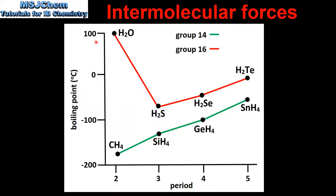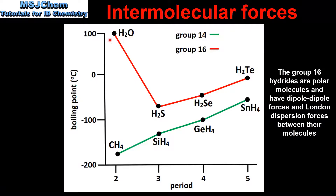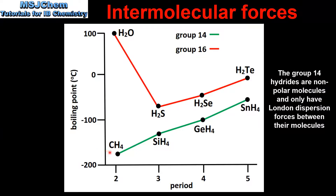In this graph we can compare the boiling points of the group 14 and the group 16 hydrides. Starting with group 16, we can see that H2O has a much higher boiling point compared to the other group 16 hydrides. This big difference in boiling point is due to the fact that H2O can form hydrogen bonds between its molecules. The increasing boiling point between H2S and H2Te is due to the increase in molar mass, resulting in stronger London dispersion forces. For the group 14 hydrides, starting with methane which is a non-polar molecule and only has weak London dispersion forces, as we go from CH4 to SnH4 the boiling point increases due to the increase in molar mass and stronger London dispersion forces.